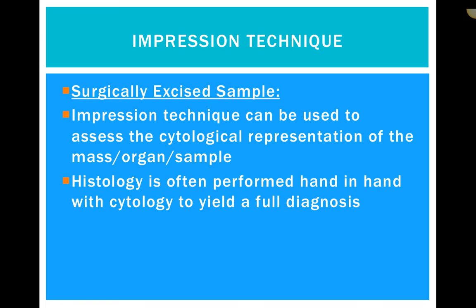Surgically excised samples are different because you're working with a piece of tissue removed from the body — whether it's an organ, a piece of skin tissue, etc. This technique can be used to assess the cytological representation of the mass or organ sample. Histology is often performed hand-in-hand with cytology, especially with surgically excised samples, because that yields the full diagnosis — or at least is more likely to yield the full diagnosis.